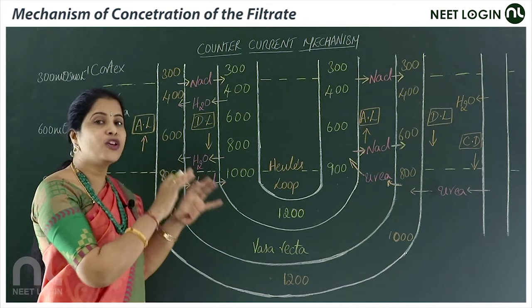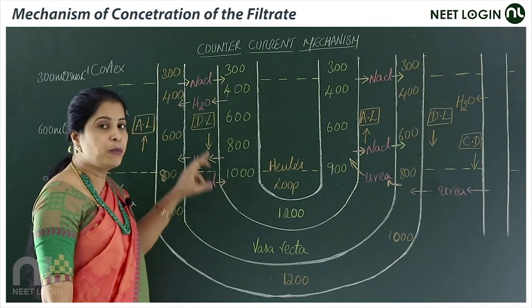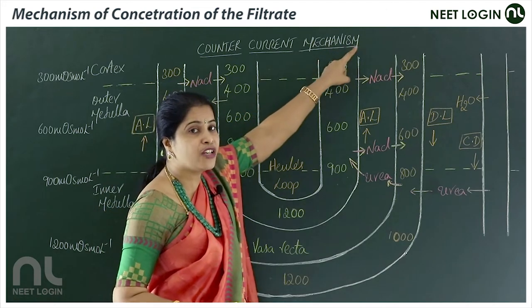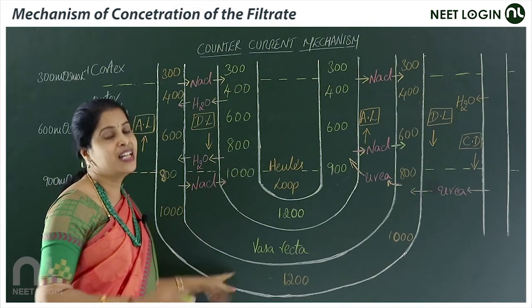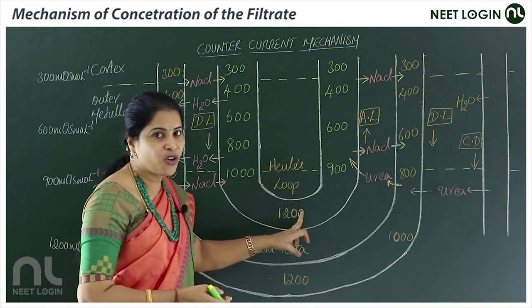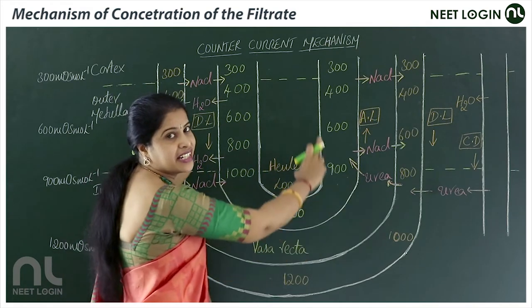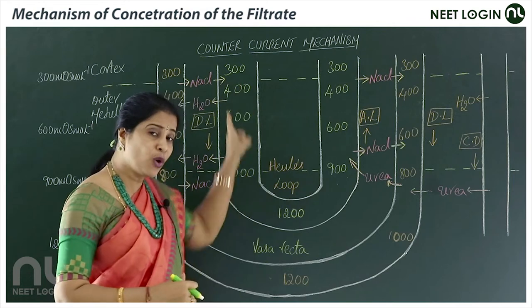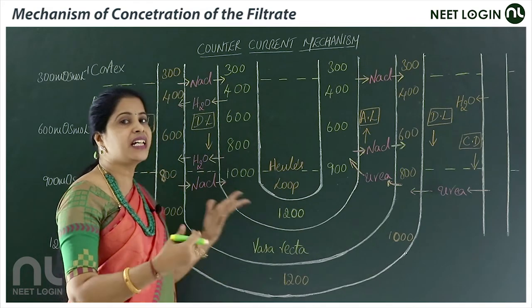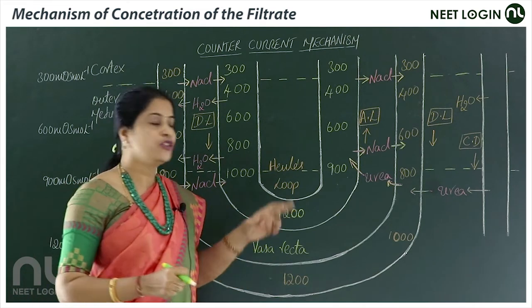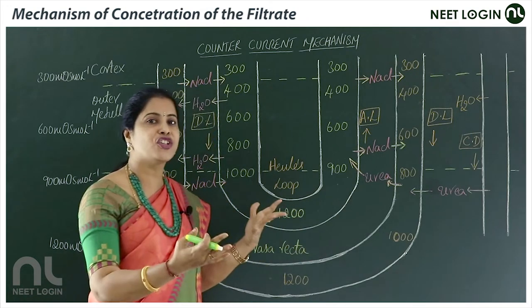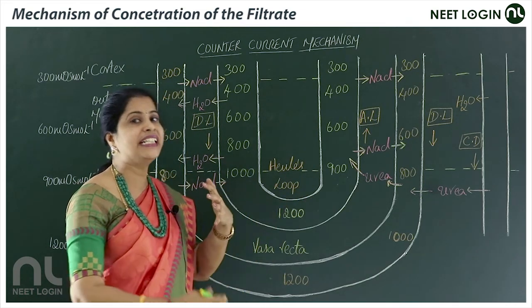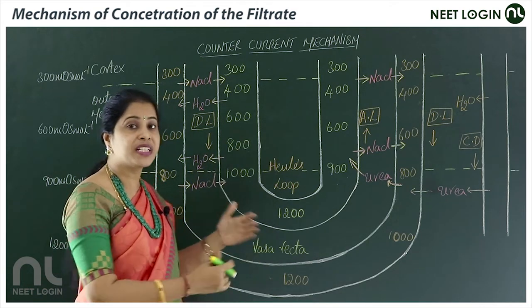To conclude the counter current mechanism: in both the descending limbs of Henle's loop and the vasa recta, concentration increases when moving from outer medulla to inner medulla. The reverse is true in ascending limbs — concentration decreases when moving from inner medulla to outer medulla. In Henle's loop, renal fluid flows; in vasa recta, blood flows. Whatever is reabsorbed through the medullary interstitial fluid re-enters the blood.